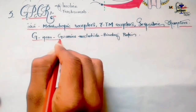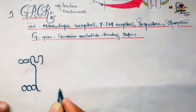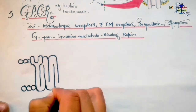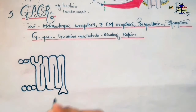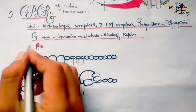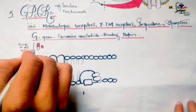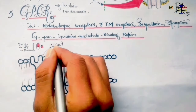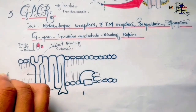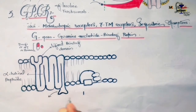These receptors are coupled with G-proteins, which are composed of three subunits — alpha, beta, and gamma — that bind GDP in their inactive state and replace it with GTP when activated by a ligand. Apart from G-proteins, these receptors have three regions: an outer ligand-binding domain where ligands bind, and an intracellular domain to which G-proteins attach when a drug or endogenous substance forms a complex with the receptor.